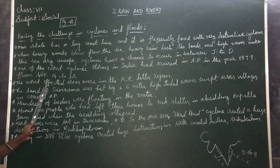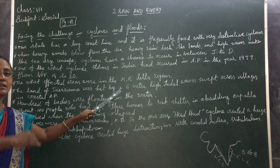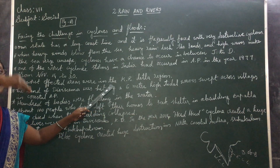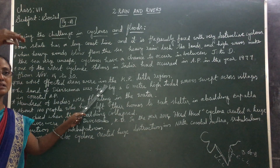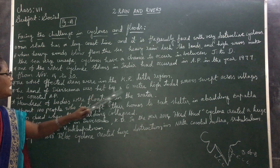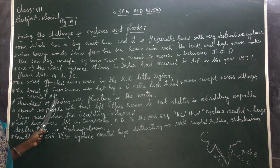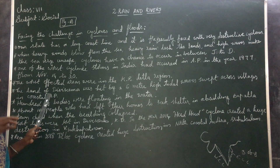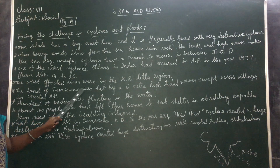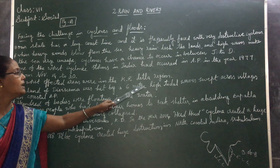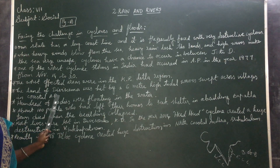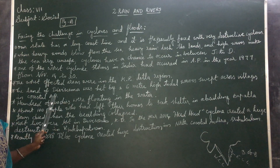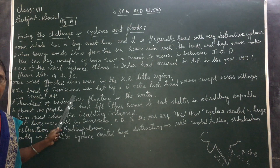The land of Divisima was hit by 6-meter high tidal waves that swept across villages in coastal Andhra Pradesh. Most lives were lost in Divisima, which is a region of the coastal AP, in the Krishna Delta area.